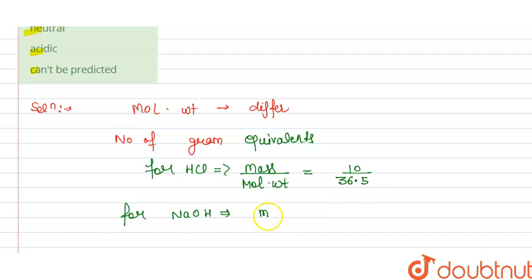we have the number of gram equivalent is mass divided by molecular weight, that is 10 divided by 40. So